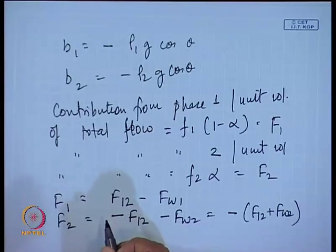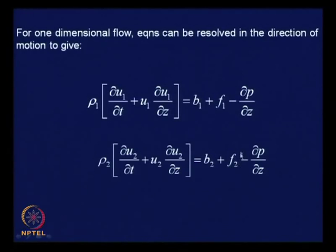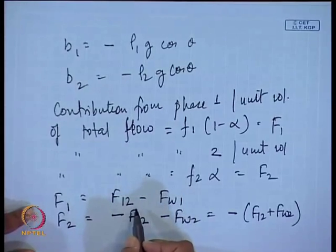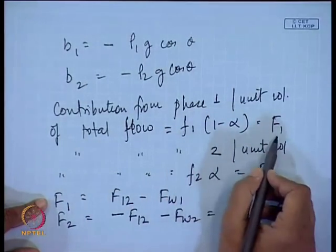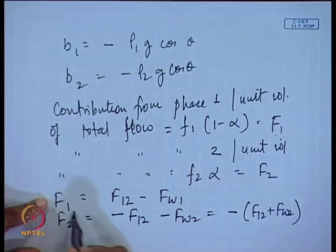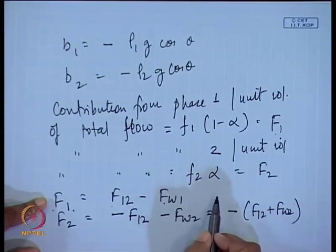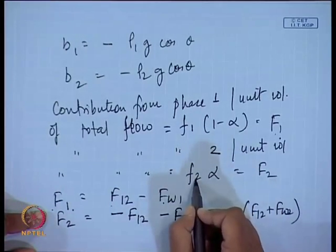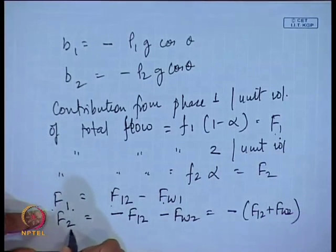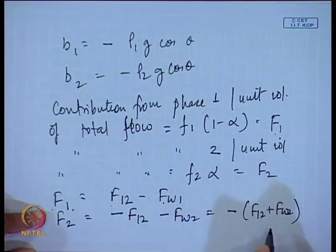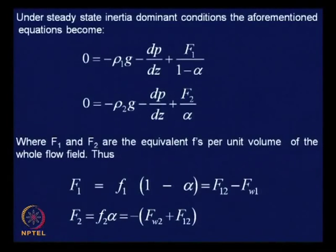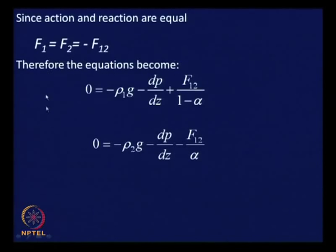So we substitute f₁ by f₁ × (1 - α) and f₂ by f₂ × α in the momentum equations. Making these substitutions, we arrive at the two equations for the two fluid model. The different interfacial phase distributions are accounted for by different expressions of f₁₂ — that is how we incorporate the different interfacial distributions.